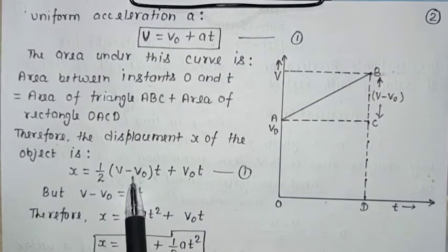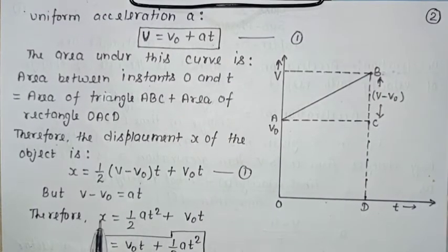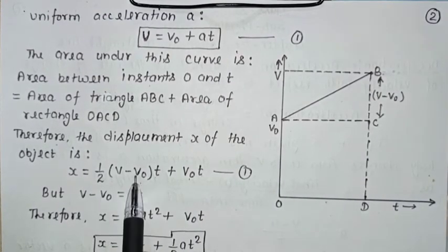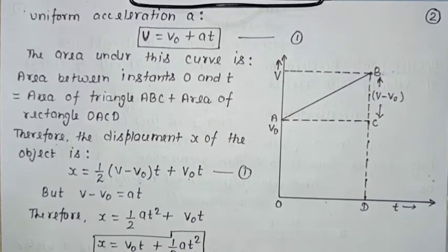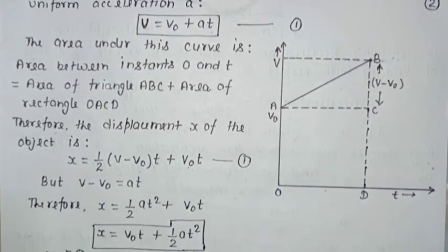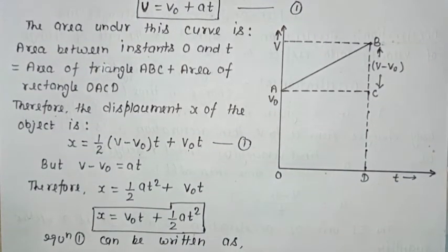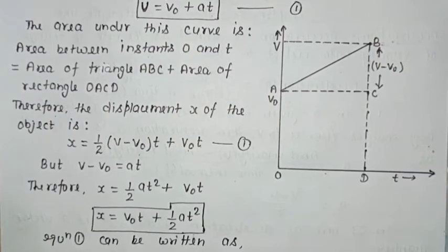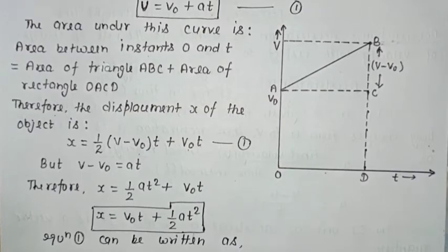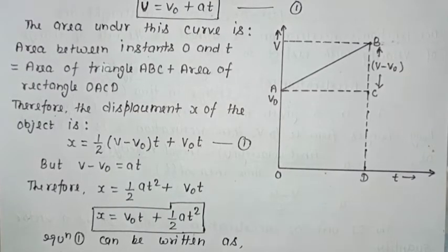Substituting V − V₀ = at into the area formula, therefore x = ½·a·t² + V₀·t. So the equation becomes x = V₀t + ½at². This is the second kinematic equation. So x = V₀t + ½at².